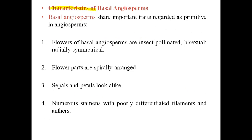The characteristics of basal angiosperms include important primitive features. One key character is the flower: the flowers are insect-pollinated, bisexual, and have radial symmetry, meaning they are actinomorphic. The flower parts — sepals, petals, stamens, and carpels — are spirally arranged, and the sepals and petals are similar in structure.